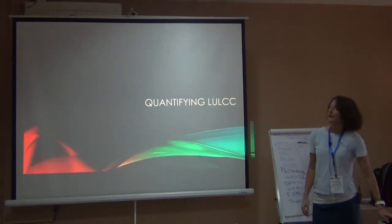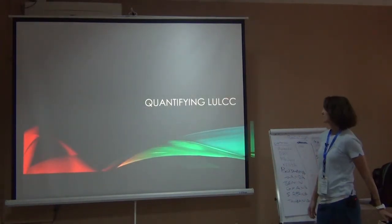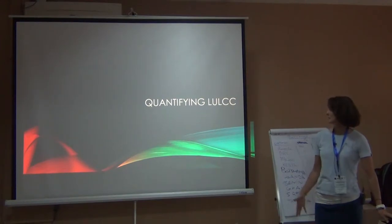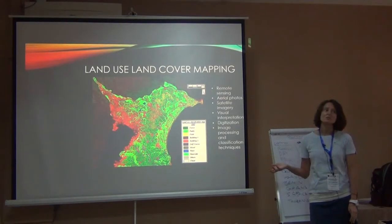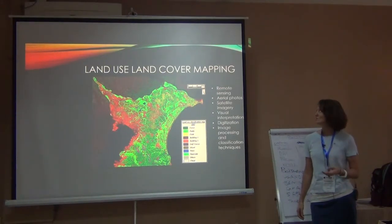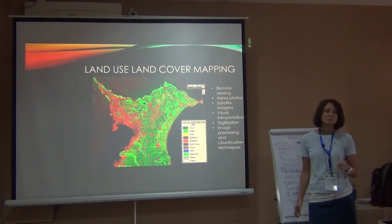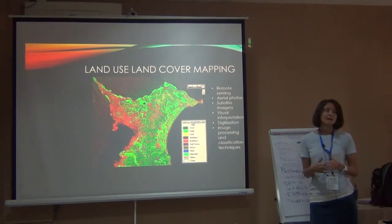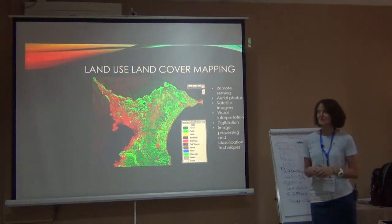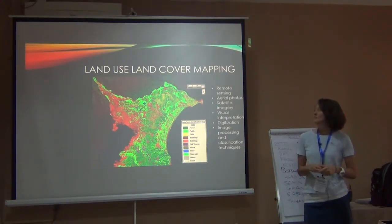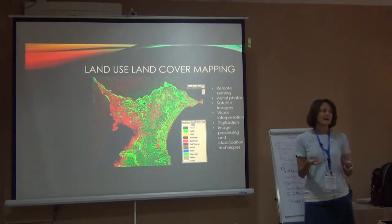So how do you quantify land use land cover change? First, you need at least two land use land cover maps to look at change — two time steps. It can be any two time steps: it can be over the course of a month, a decade, 50 years, whatever is available. But you do need two time steps.